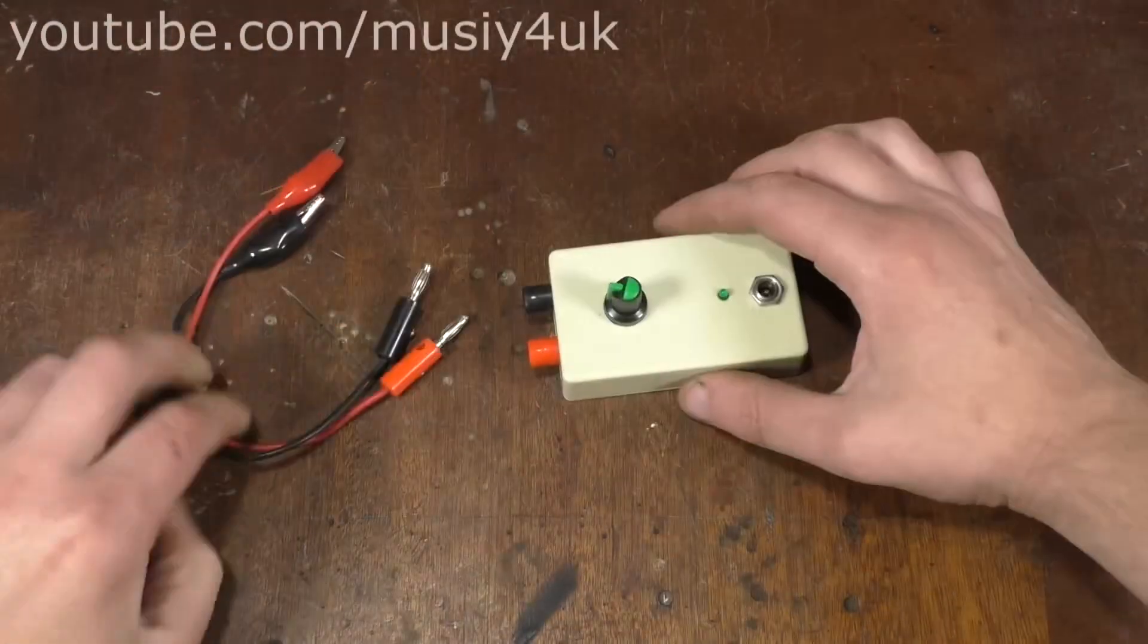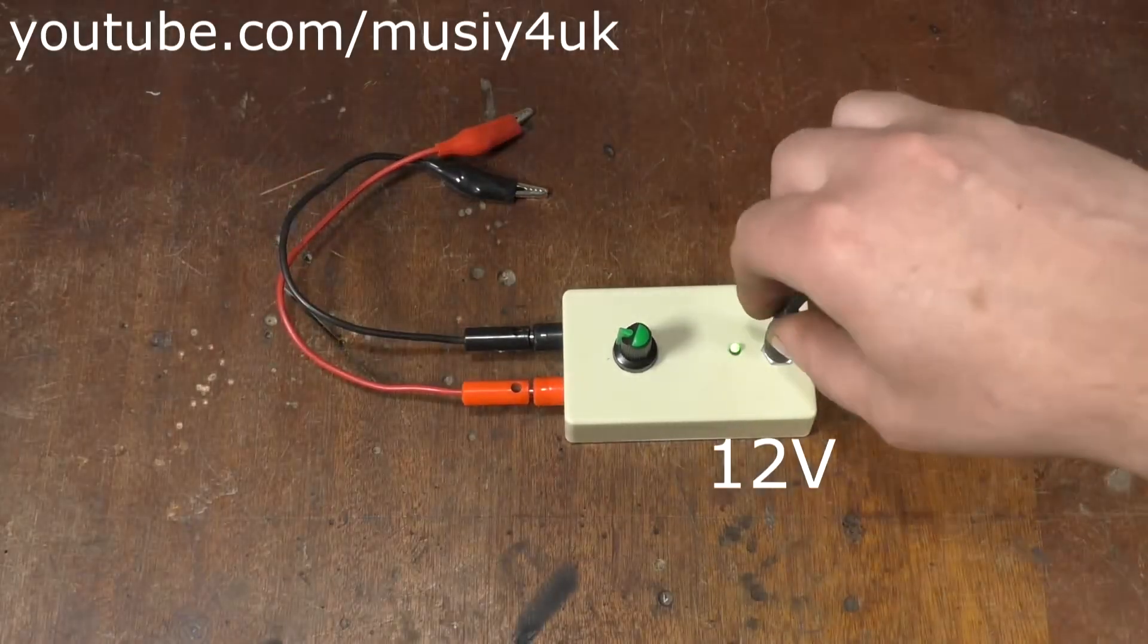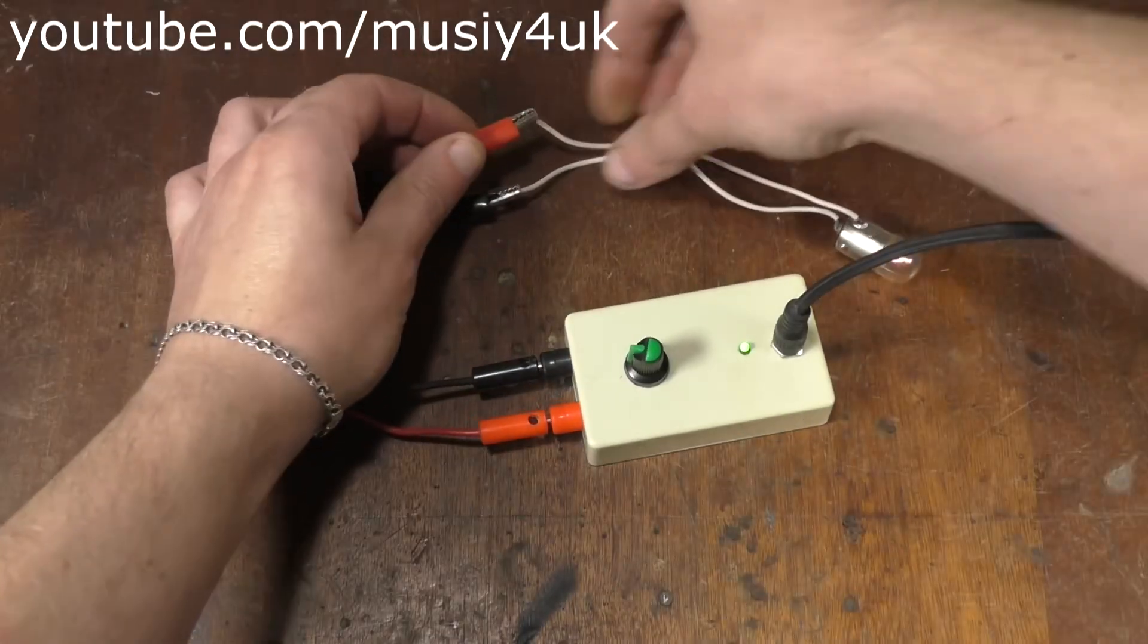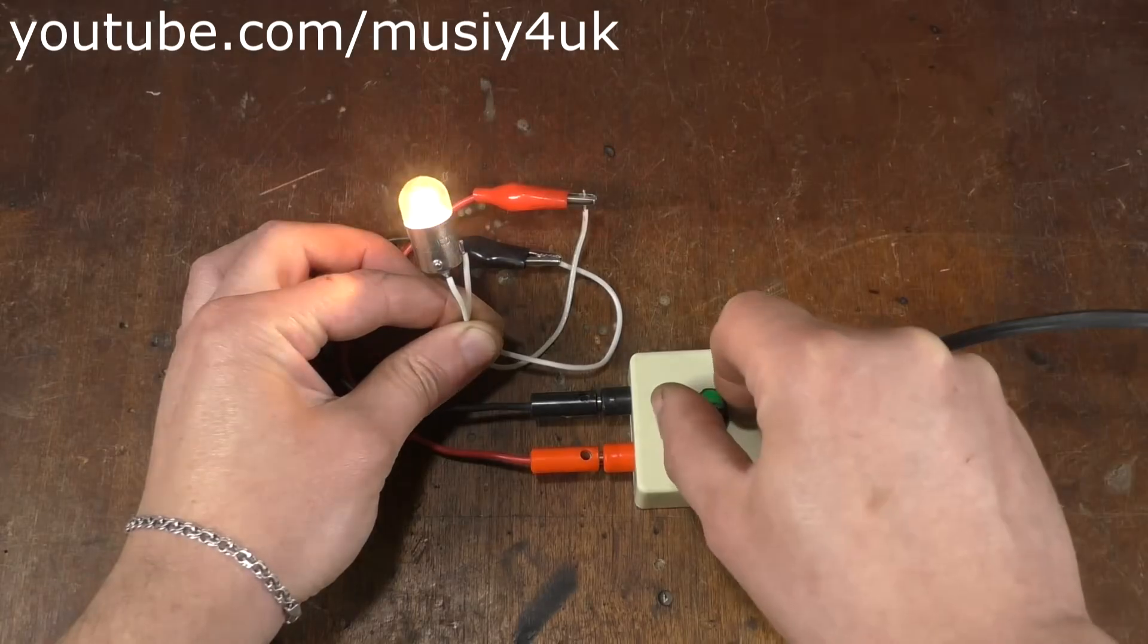Now, we connect the wires with clamps to the output and supply 12 volts to the input. We connect some kind of load to the clamps, for example, a 12-volt light bulb. And now, by turning the knob, we can adjust its brightness.